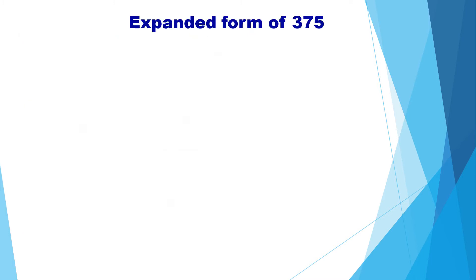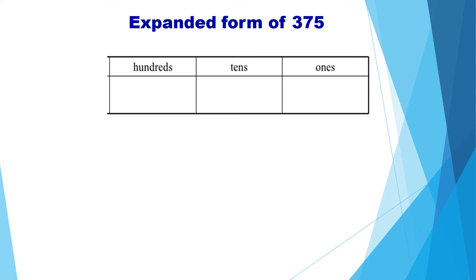Now let us see some examples. Let us write the expanded form of 375. First, we will write the place values: ones, tens, hundreds.